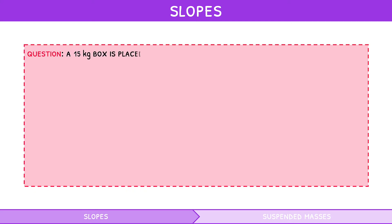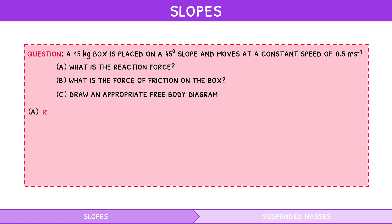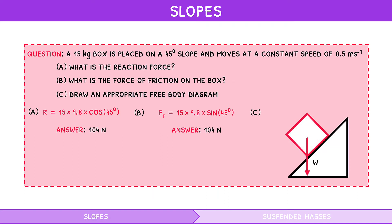Let's take a look at an example question. A 15 kilogram box is placed on a 45-degree slope and moves at a constant speed of 0.5 meters per second. A: What is the reaction force? B: What is the force of friction on the box? C: Draw an appropriate free-body diagram. For A, reaction force equals weight times cosine of theta, which is 104 newtons. For B, friction equals weight times sine of theta, which is also 104 newtons. For C, the free-body diagram shows an arrow for weight downwards from the centre of the box, a shorter arrow for the reaction force perpendicular to the surface, and an equally short arrow for friction parallel to the surface.